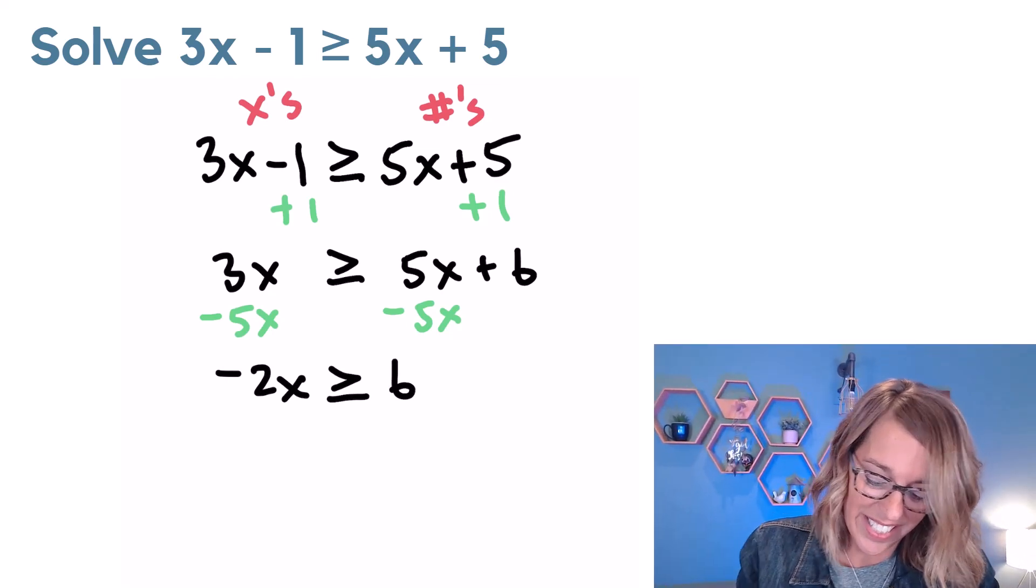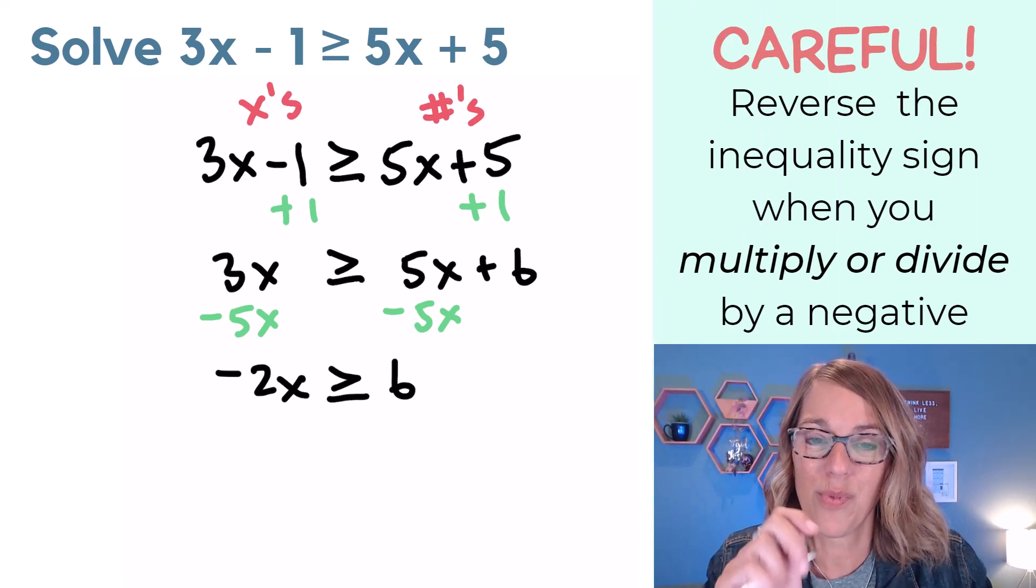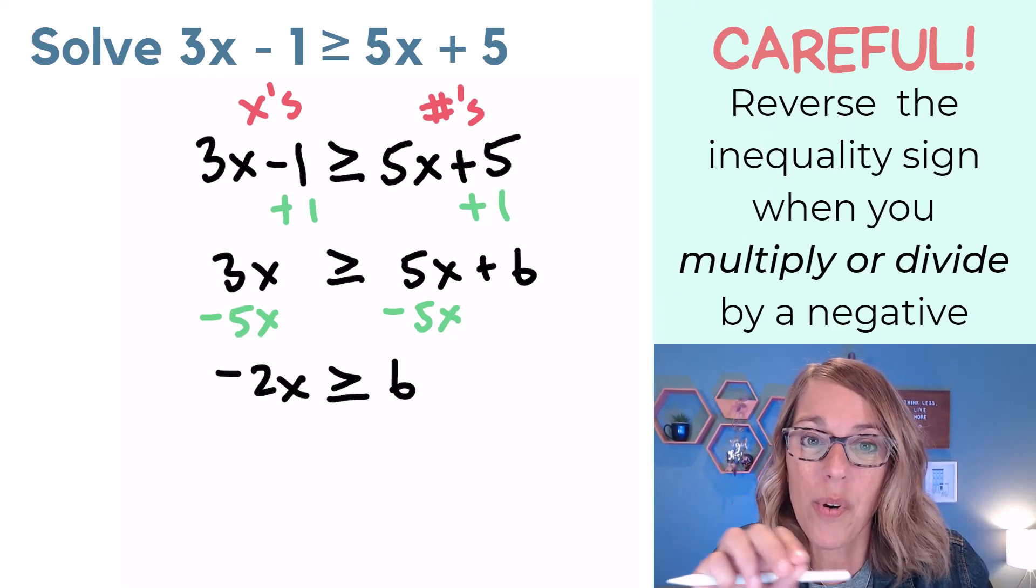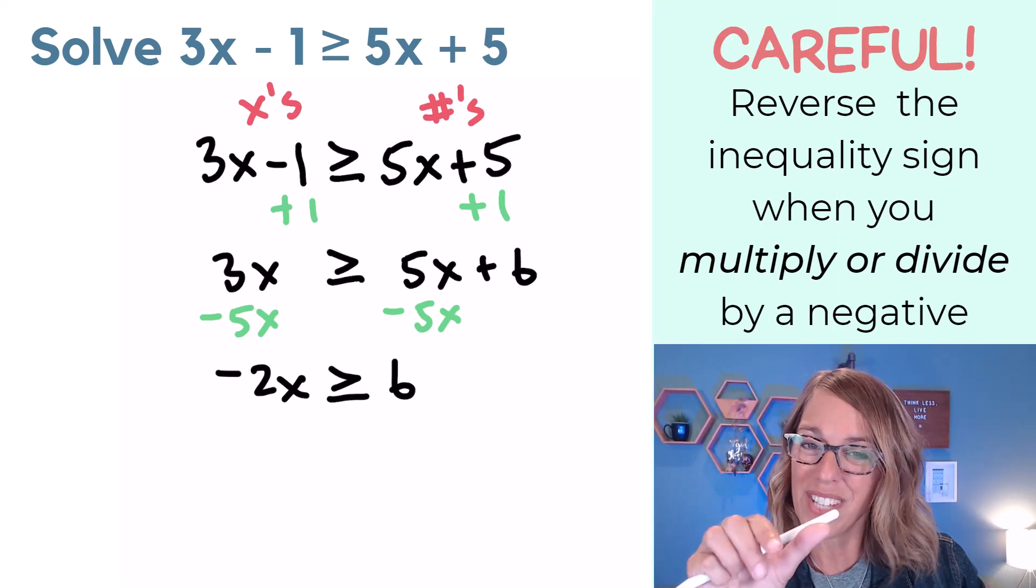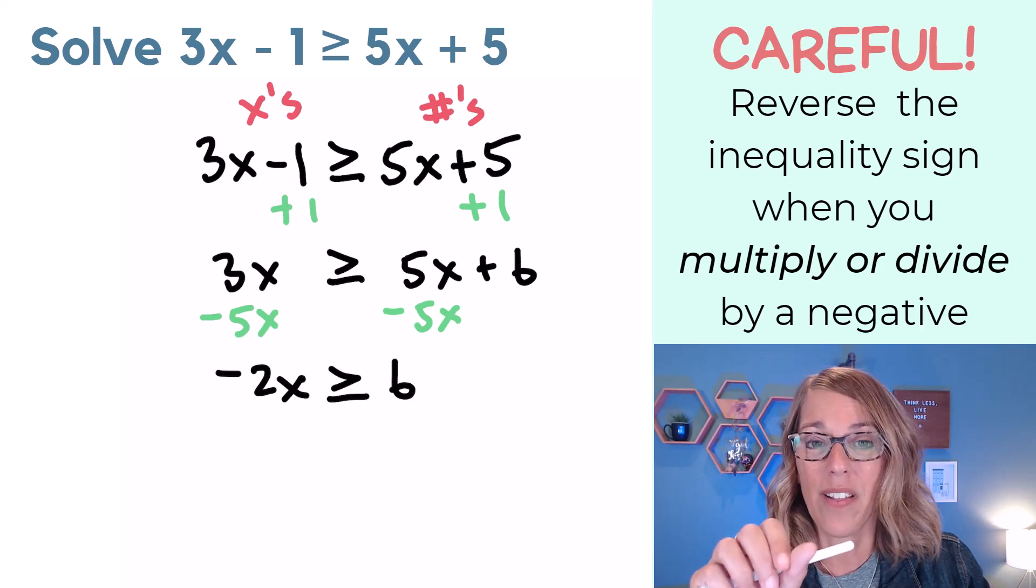Now in this next step, I need to divide by that negative 2. This is our special rule. Whenever we multiply or divide by a negative, negative sign means opposite. So I need to do the opposite of my inequality symbol too. I'm going to reverse it.